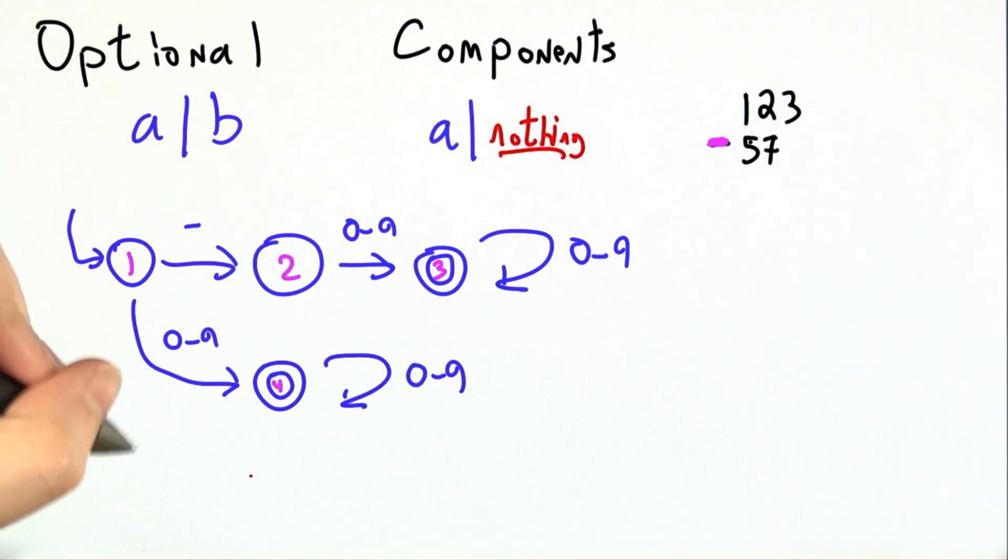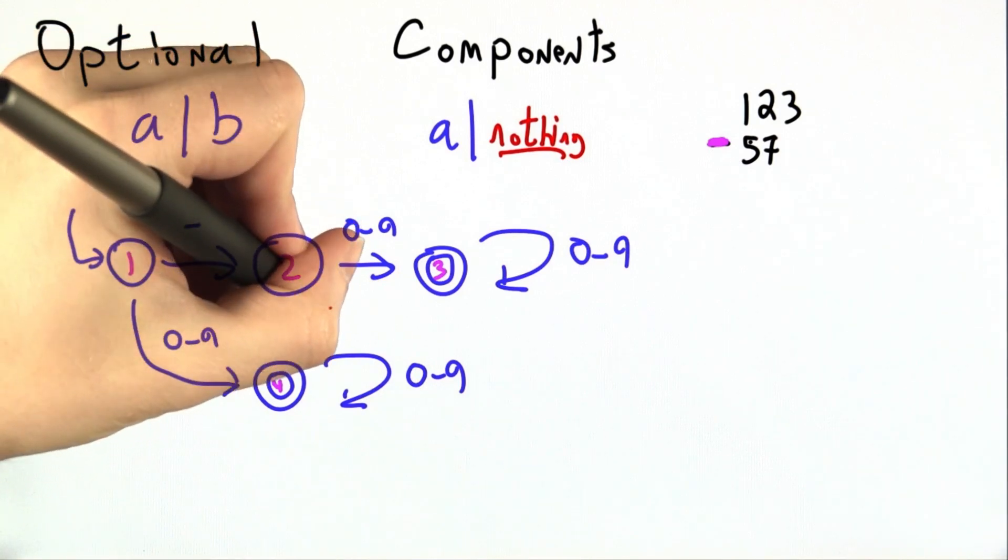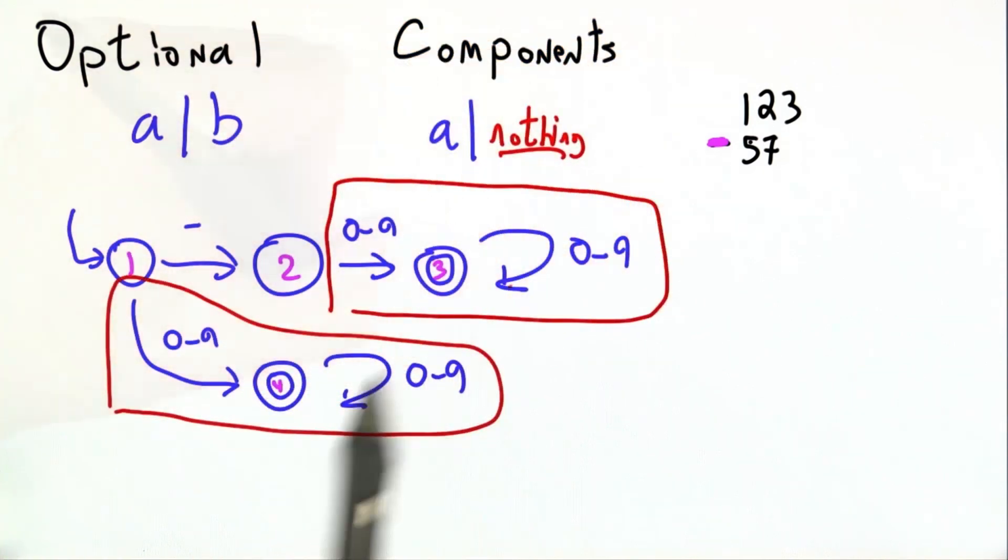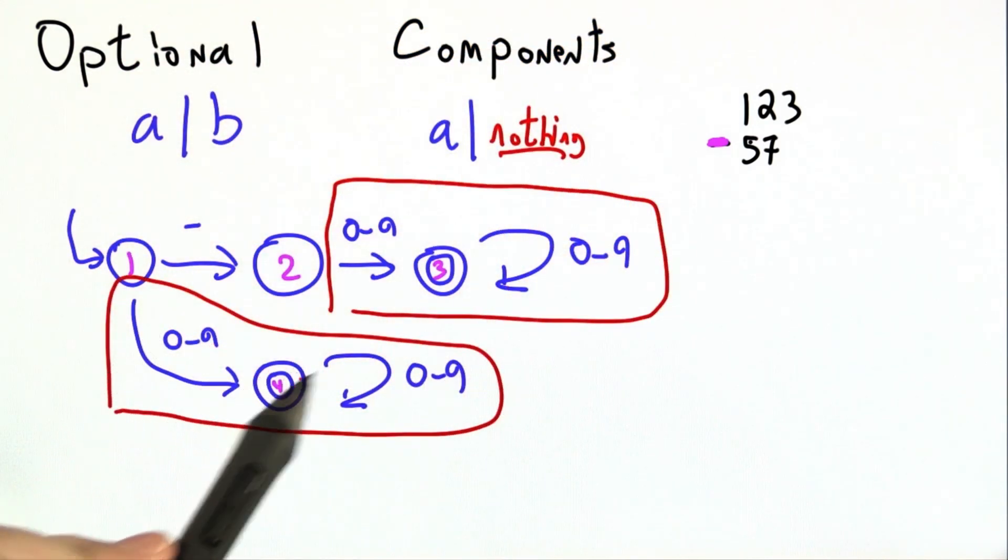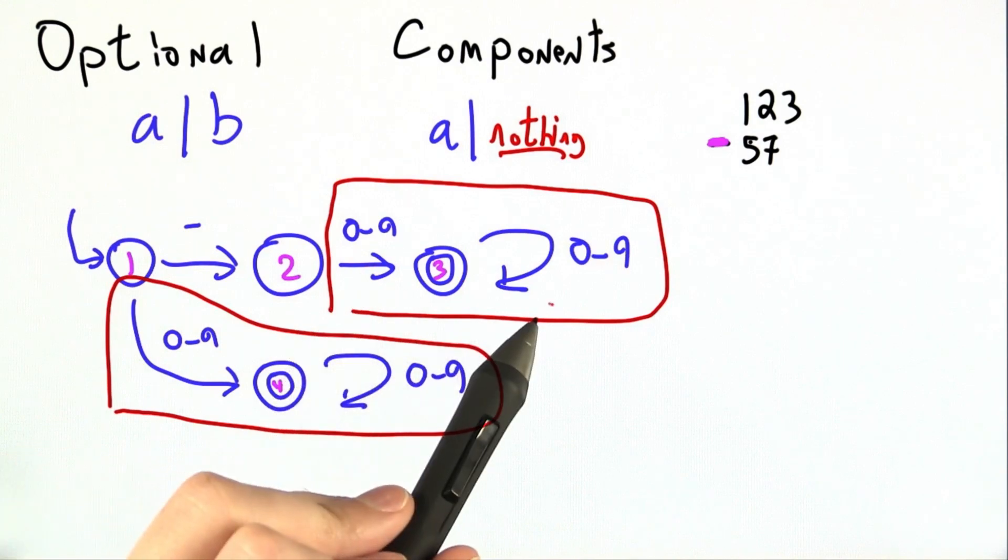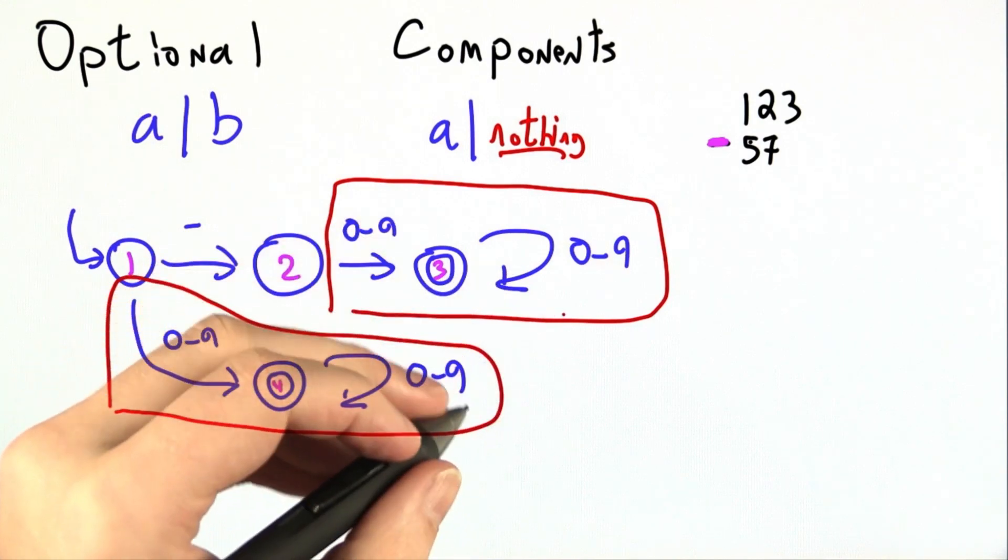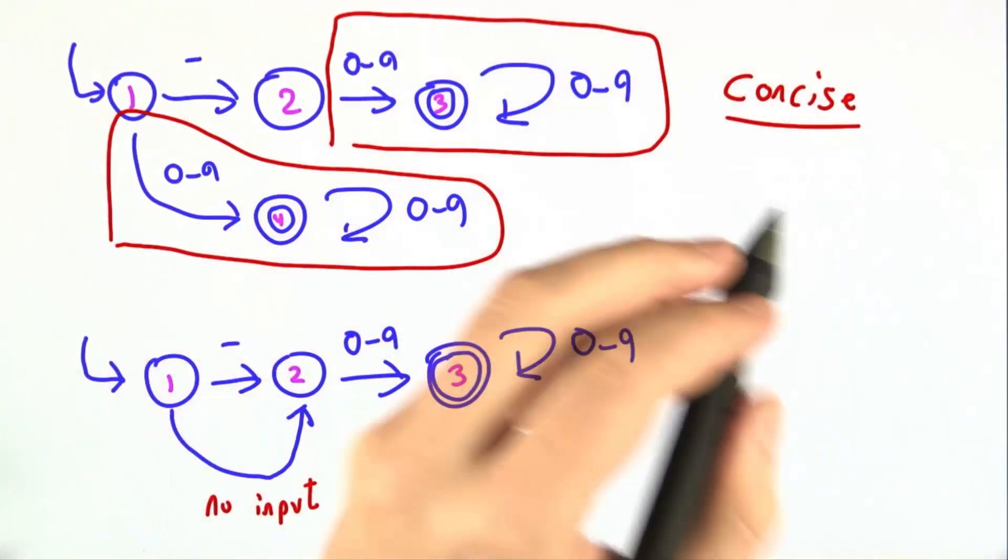But you may have noticed quite a bit of duplication in this finite state machine. These two red areas are the same. It's an edge labeled 0 through 9, an accepting state with a self-loop labeled 0 through 9, and one of the things we really wanted was to be concise.